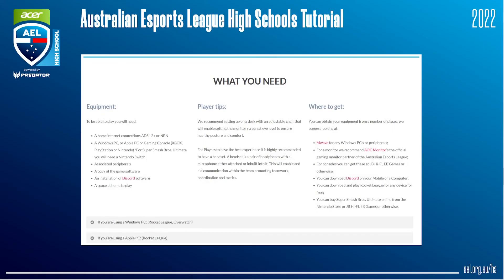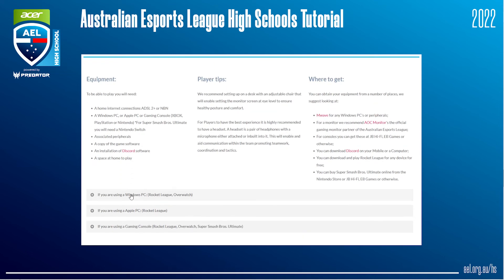Now let's start talking about game platforms. We need to know what game platform we are using when we host a competition. For games that are only on one platform, for example Super Smash Bros. Ultimate, the game platform required is very simple. However, for some games, for example Rocket League and Overwatch, you may need to specify to competitors which platforms are going to be used for competition. If you need help with this, feel free to take a look at our website ael.org.au/hs to see what platforms are used for each game when we host a tournament.